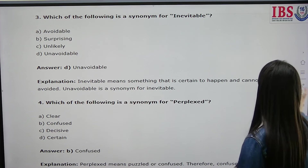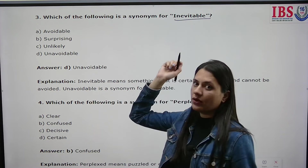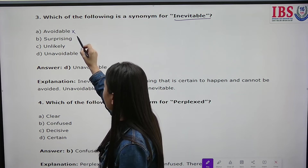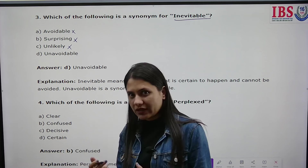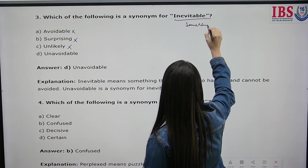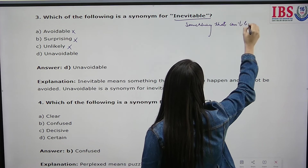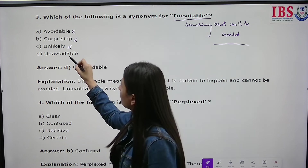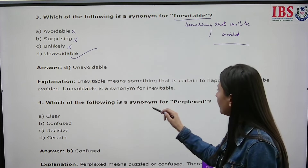Which of the following is a synonym for 'inevitable'? The literal meaning of inevitable is something which cannot be avoided. Avoidable doesn't fit, surprising doesn't fit, and unlikely doesn't fit either. Since inevitable means something that can't be avoided, the synonym is unavoidable.